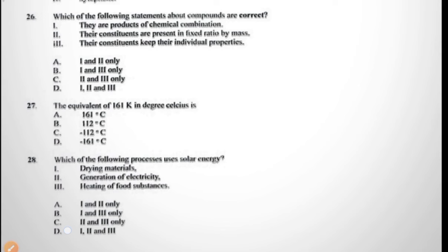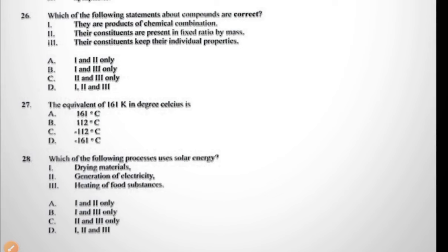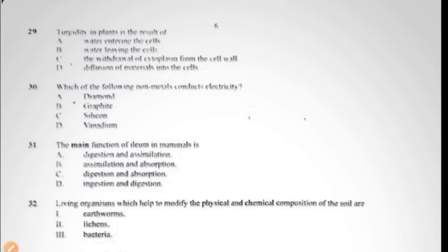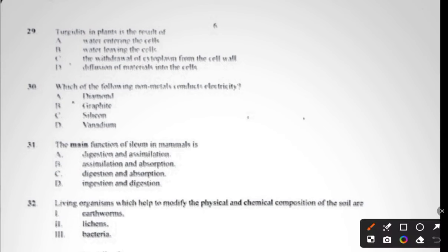Question twenty-eight: which of the following processes use solar energy? (i) Drying of materials, (ii) generation of electricity, (iii) heating of water substances. The answer to question twenty-eight is D, because all are correct. Question twenty-nine: the turgidity in plants is the result of water entering the cells, water leaving the cells, cytoplasm drawn out from the cell wall, or diffusion of materials into the cell. The turgidity in plants is a result of water entering the cells, so it's A. Question thirty: which of the following non-metals conduct electricity? Diamond, graphite, silicon, or vanadium. The answer to question thirty is B, graphite.